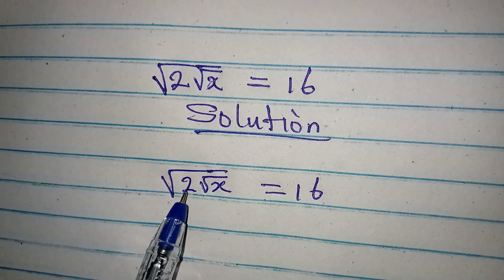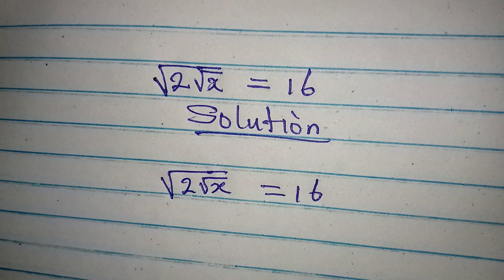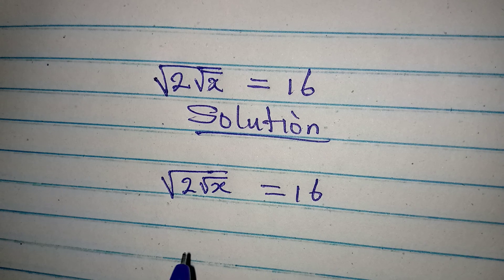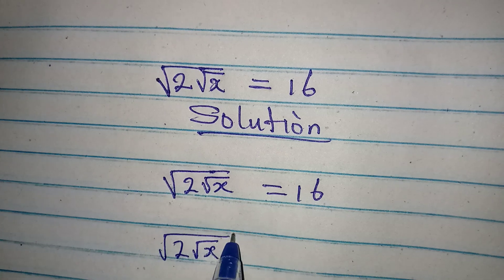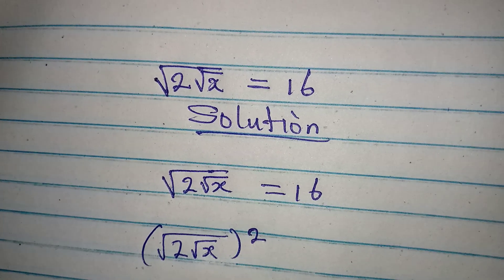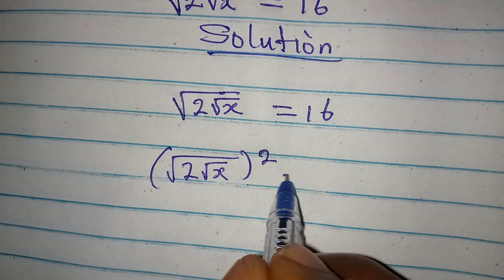So we have 2 root X square root, and then we square the whole of this. If you do to one side you do to the other side, so we have 16 squared.